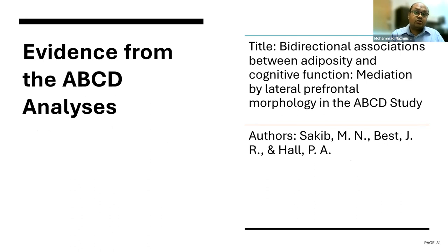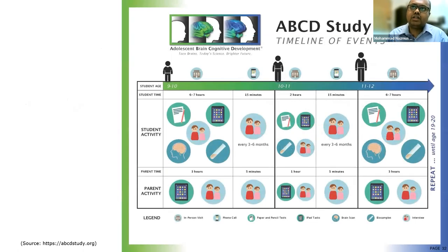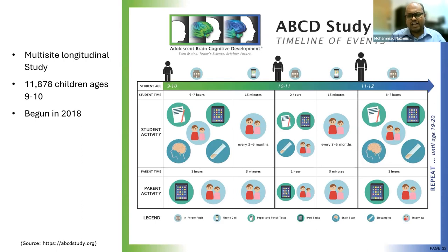Our Study Two showed that there is a bidirectional association between adiposity and executive function in middle-aged adults. Our next step was to examine whether this association is also true for an adolescent population. We conducted this bidirectional association analysis in a sample of adolescents using the ABCD dataset. The ABCD study is a multi-site longitudinal study in the United States that recruited approximately 12,000 children ages 9 to 10 years, beginning data collection in 2018. At the time of our data analysis, we had Wave 1, 2, and 3 datasets available.